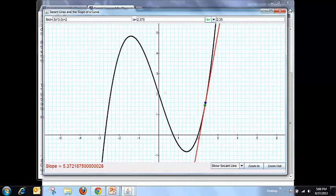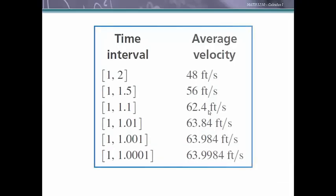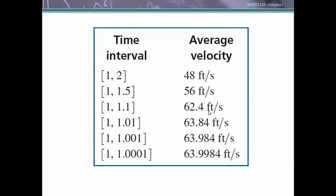Let's look at a table of values for the motion of a particle, showing different time intervals and the computed average velocity for each. From 1 to 2 seconds, the average velocity is 48 feet per second. From 1 to 1.5 seconds, it's 56 feet per second. As we move the time interval closer and closer to 1 second, the average velocity gets closer and closer to 64 feet per second. So a reasonable estimate for the instantaneous velocity of this particle at 1 second is 64 feet per second.